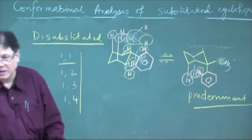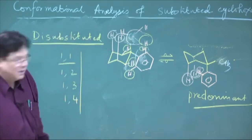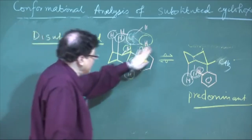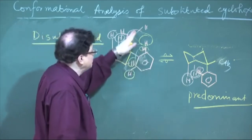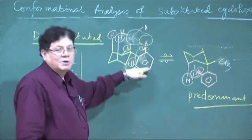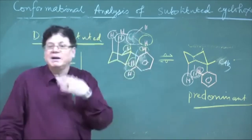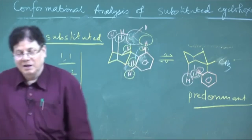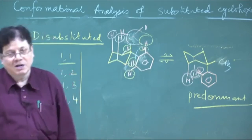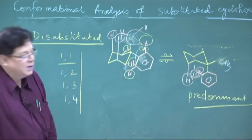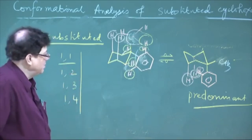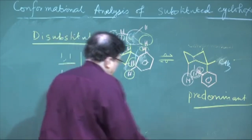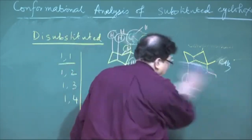This is an interesting example. In general, if it is not an aromatic ring and the competition is between only alkyl groups, the bulkier alkyl group will always preferentially occupy the equatorial position. Thank you.